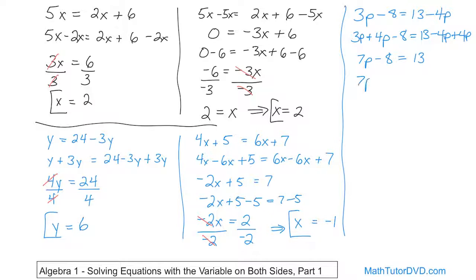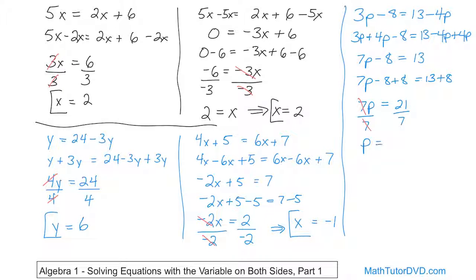The opposite of negative 8 is adding 8 to both sides. On the left-hand side, all I have left is 7p. On the right-hand side, 13 plus 8 is 21. To get p by himself, since he's multiplied by 7, I divide both sides by 7. The 7's cancel because they're on the top and the bottom. So p equals 21 divided by 7, which is 3. That's the final answer. If you take this value of p and stick it into both sides, you'll find the left and right-hand sides are equivalent — meaning you've got the right answer.